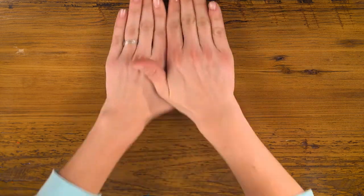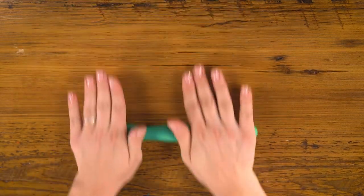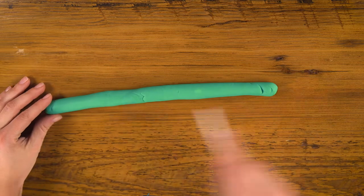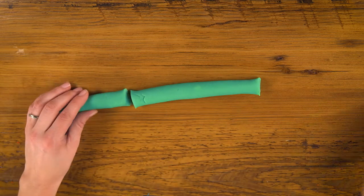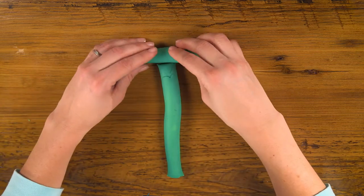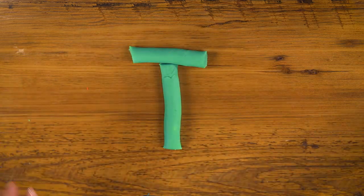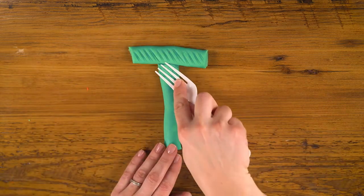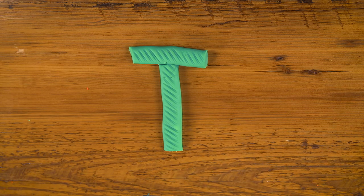For my T, I'm going to use the green again. Roll out another rope. Trim the ends. And use my fork's tines to put a little print in it or add texture, which also starts with T.